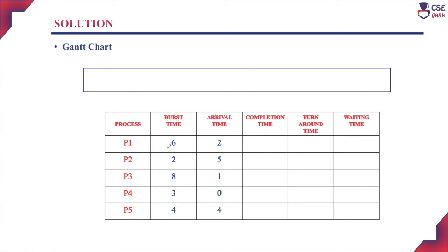Process P1 has a burst time of 6 milliseconds and arrival time of 2 milliseconds. Process P2 has a burst time of 8 milliseconds and arrival time of 5 milliseconds. Process P4 has a burst time of 3 milliseconds and arrival time of 0 milliseconds. Process P5 has a burst time of 4 milliseconds and arrival time of 4 milliseconds. Based on the arrival time, whichever process entered into the ready queue first will be assigned to the CPU first, and process P4 arrived at 0 milliseconds.